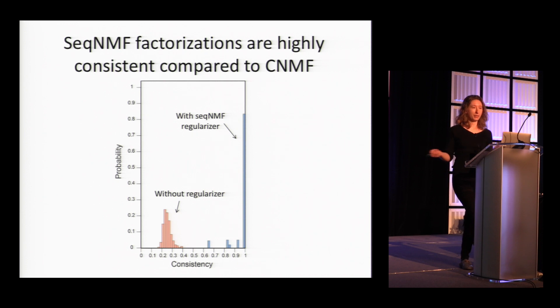If we run our algorithm without the regularizer, so if we run traditional convolutional NMF, then we get highly inconsistent factorizations. We get a different redundancy each time we run it. It's hard to interpret. If we regularize, then almost all the time we get exactly the same answer, which we know is the right answer because we simulated this data.